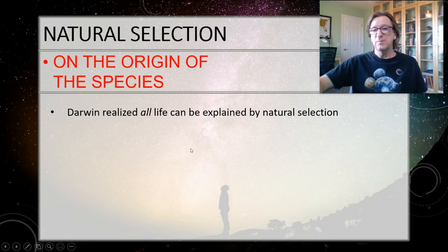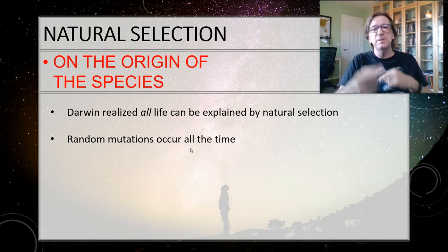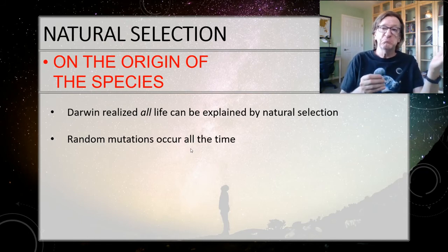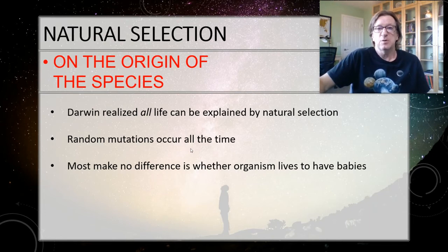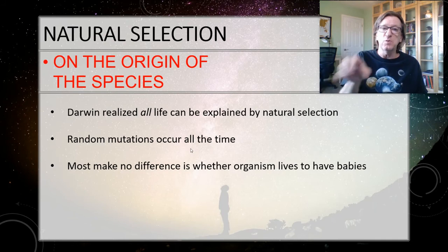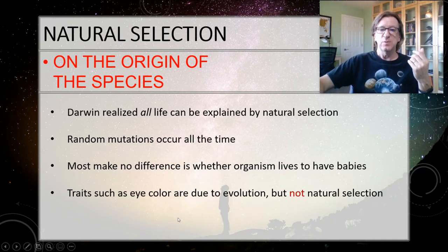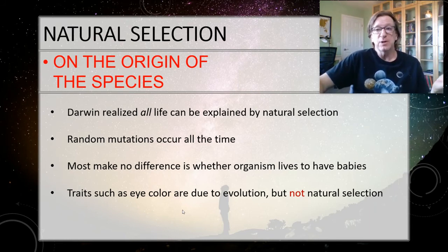Darwin realized that all life can be explained by natural selection. Starting from individual single-cell organisms, over millions and billions of years you get random mutations, some of which help and some of which don't in a particular environment. Most mutations make no difference whatsoever — the mutations are just random. You throw the dice and some come out good and some don't. The ones that do come out good, as Darwin realized, make their population expand and become a larger percentage of the population. Eye color is an example of evolution — you may have blue, green, brown, or black eyes — but this is not due to natural selection. You did not evolve brown eyes because it helped you compete or survive better. It's simply a random trait that just doesn't make any difference.